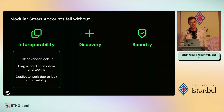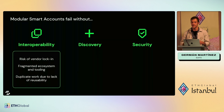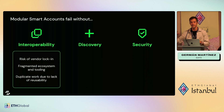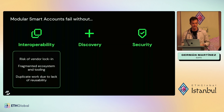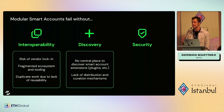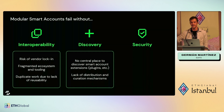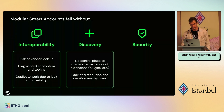Interoperability: there's a risk of vendor lock-in with multiple projects building smart accounts that are not interoperable, that cannot work together, creating extensions that cannot be reused, and creating a fragmented ecosystem. Discovery: currently there's no centralized place where users can discover what kind of extensions can be used, like plugins.